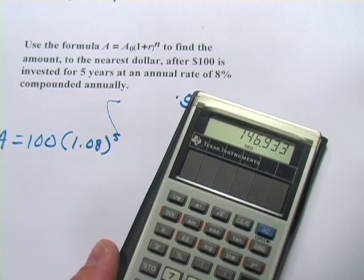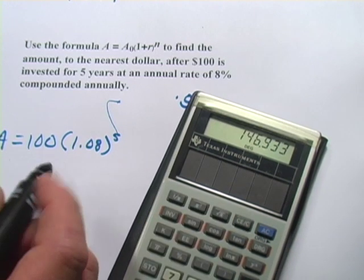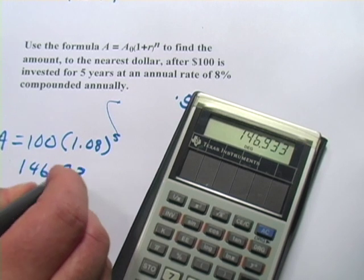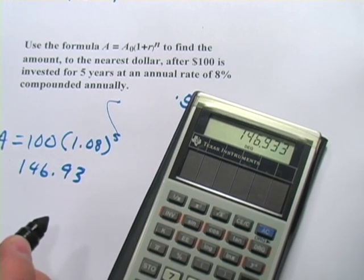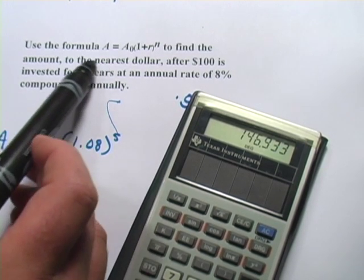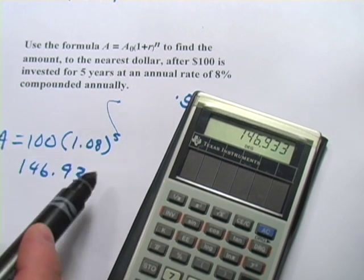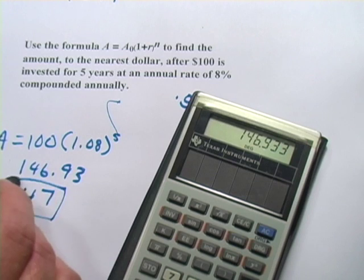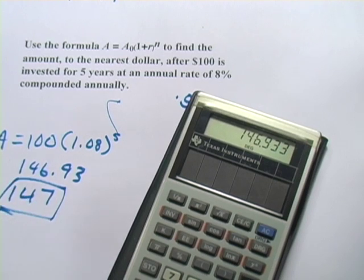So at 8% interest, after five years, compounded annually, I get $146 and 93 cents. And let's see. They said they wanted the amount to the nearest dollar, so that would be 147. So that's how to use the exponent key.